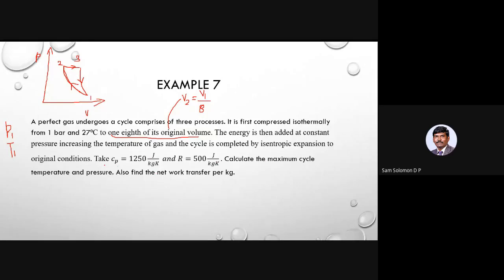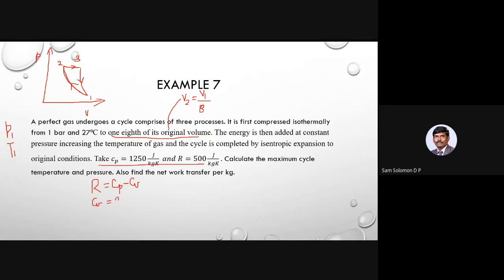The cp and R values are given, so be careful: you need to find cv. cv = cp − R. With cp = 1250 J/kg·K and R = 500 J/kg·K, cv = 1250 − 500 = 750 J/kg·K.